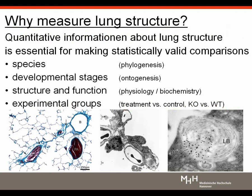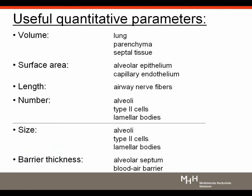To make sure we are all on the same page, I will use the first few minutes to repeat the main points of the first webinar. When we want to measure lung structure, we usually do this to make statistically valid comparisons — for example, to establish structure-functional relationships or to compare different experimental groups. The quantitative parameters we want to obtain have a certain dimension: they may relate to volume (three-dimensional), surface area (two-dimensional), length (one-dimensional), or number of particles (zero-dimensional).